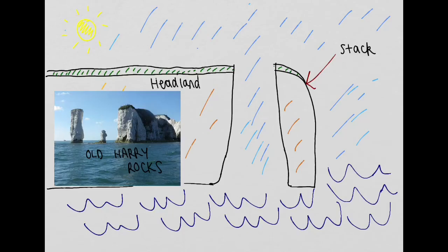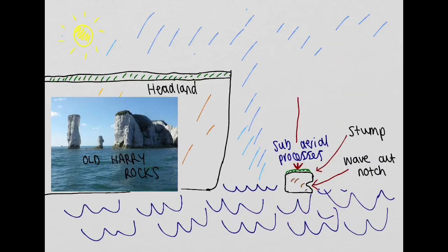Over time the stack is eroded by both the sea at the base of the rock to create a wave cut notch, and also from sub-aerial processes such as weathering. The stack eventually shrinks to form a stump, as we have on the diagram here in front of us, before this is totally eroded away and transported throughout the coastal system.